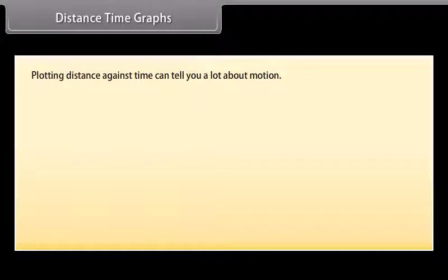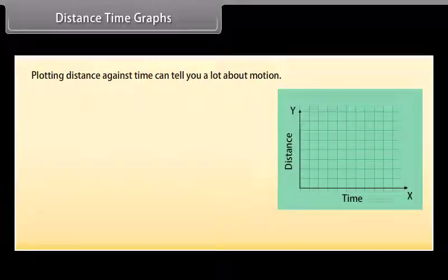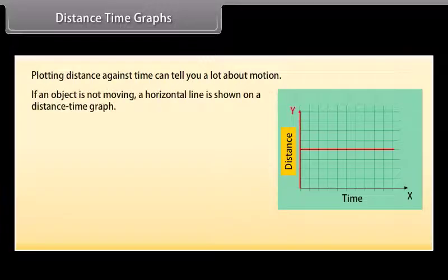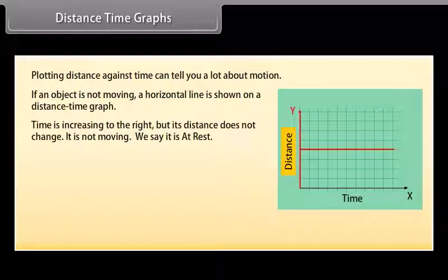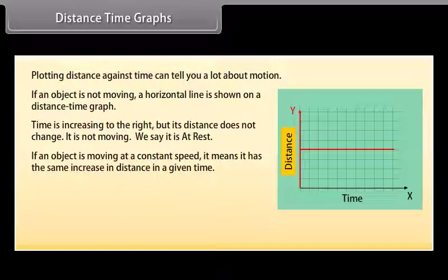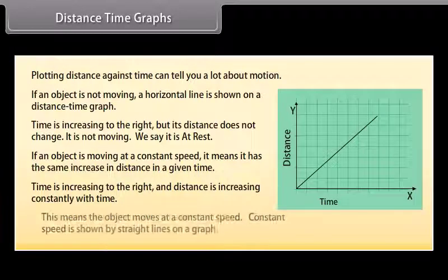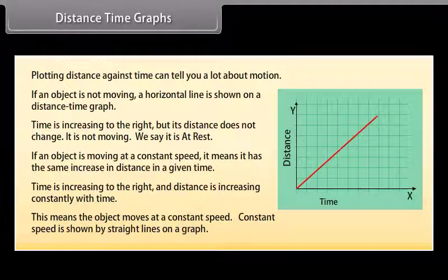Distance-time graphs. Plotting distance against time can tell you a lot about motion. Time is always plotted on the x-axis; the further right, the longer the time from start. Distance is plotted on the y-axis; the higher the graph, the further from the start. If an object is not moving, a horizontal line is shown — the time increases but distance does not change, meaning it is at rest. If an object moves at constant speed, it has the same increase in distance in a given time, shown as a straight line on the graph.